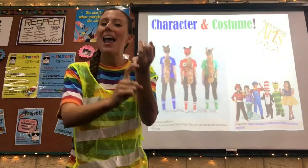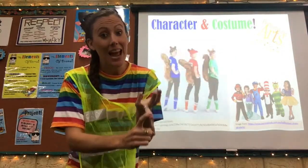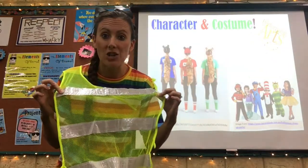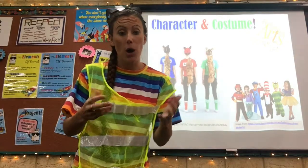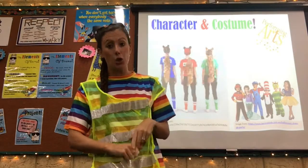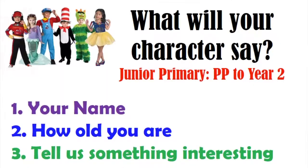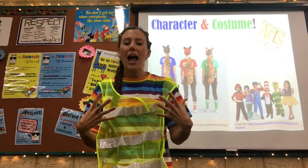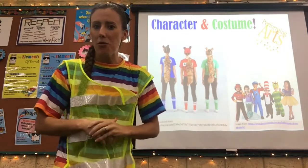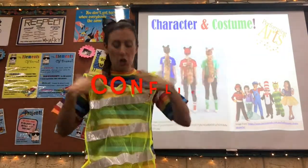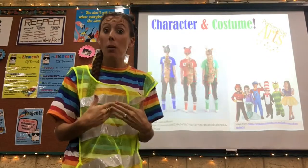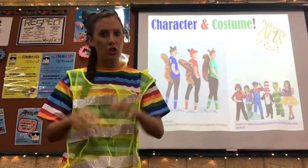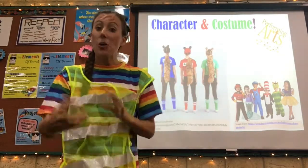So there you are — I told you my age, I told you my name, I said something interesting about me: that I worked in safety as a safety manager. That's what you have to do if you're in junior primary — pre-primary, year one, year two. You say your name, age, and something interesting about your character that matches your costume. I also added an extra bit at the end for year three and fours about conflict — I started talking about a problem my character had. The problem was that a lot of people didn't like me because I was so safety-conscious, which made me quite bossy.